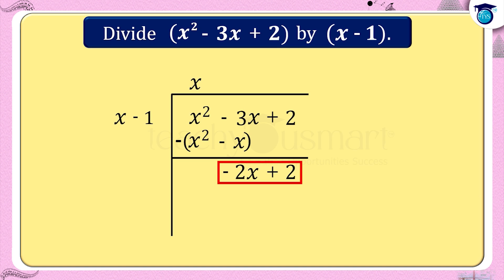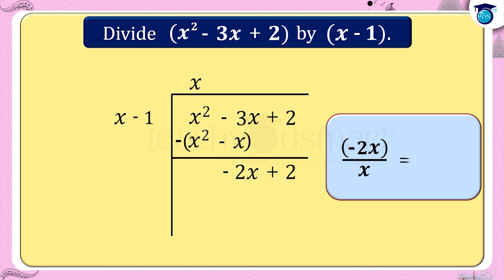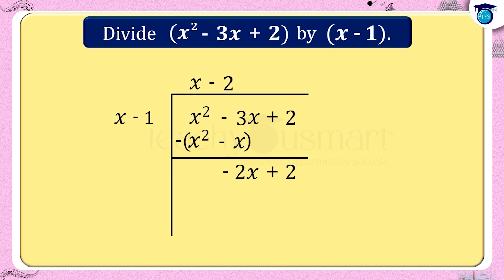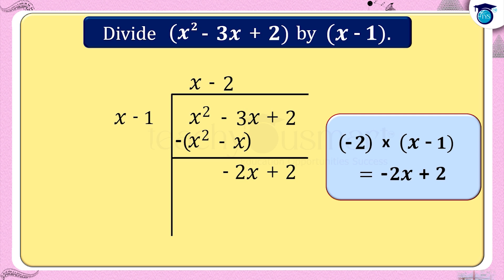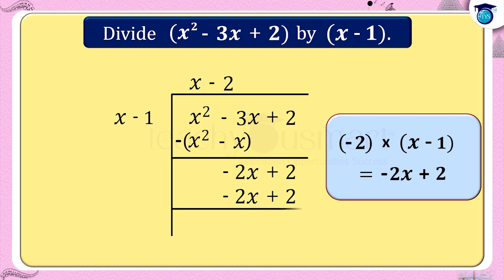The next dividend is -2x + 2. Divide the first term -2x by the first term of the divisor x. That is -2x ÷ x = -2, which is the next term of the quotient. Multiply -2 by each term of the divisor x - 1: -2 × (x - 1) = -2x + 2. Subtract this product -2x + 2 from the dividend -2x + 2, and we get the remainder as 0.